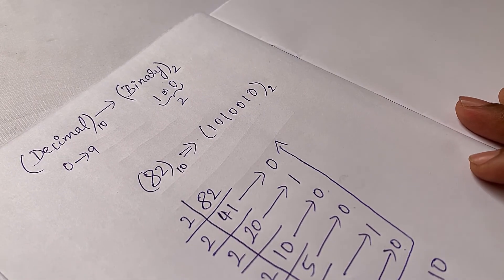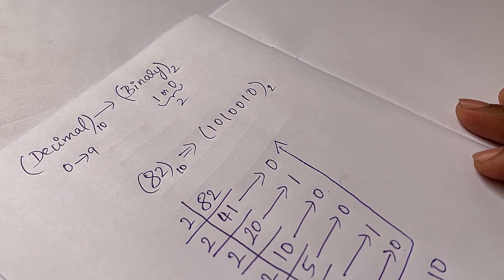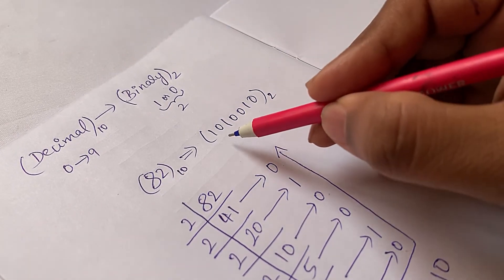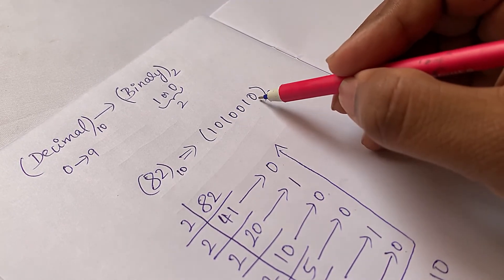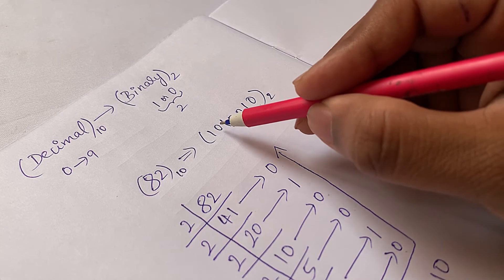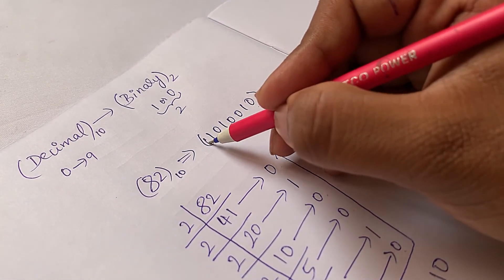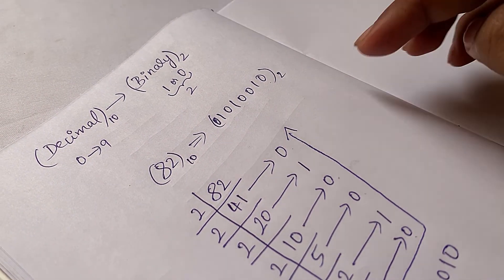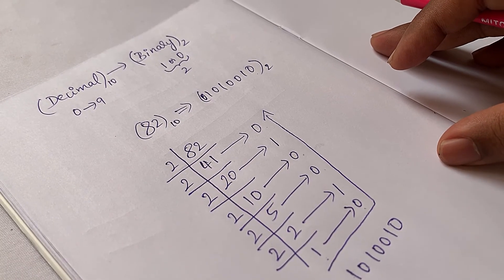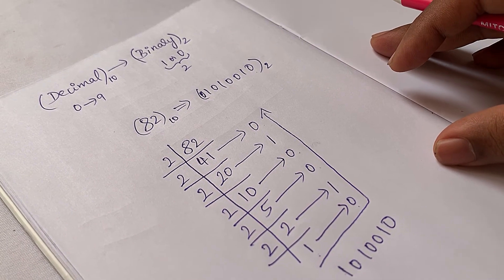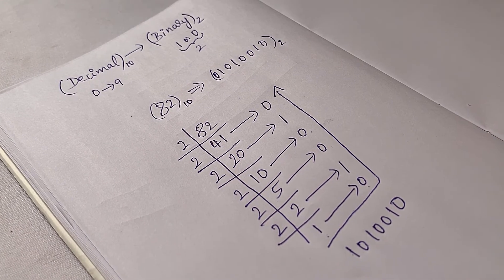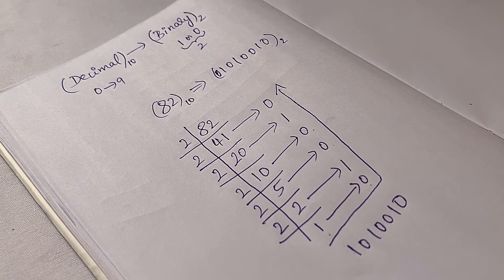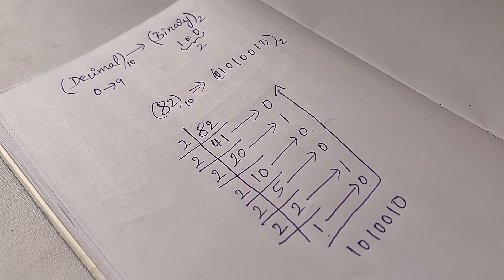Since binary numbers should be represented in 8-bit, 16-bit, 32-bit, or 64-bit format, and our result has only 7 bits, we add a leading zero on the left to make it 8 bits. So decimal 82 in 8-bit binary format is 0 1 0 1 0 0 1 0. This is how you convert any base 10 number into its equivalent base 2 binary format.